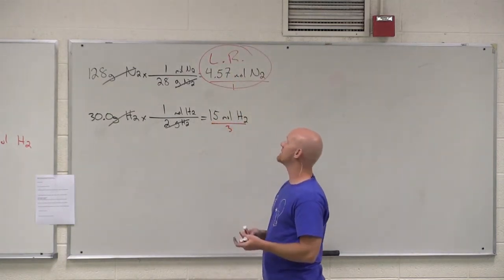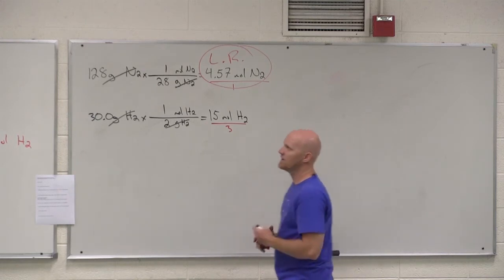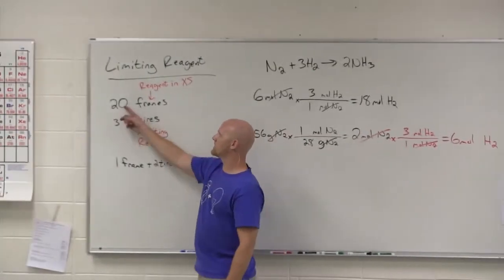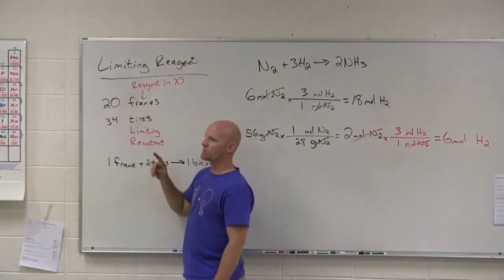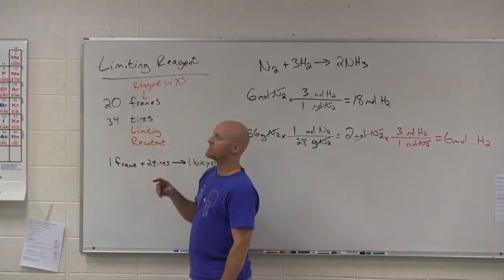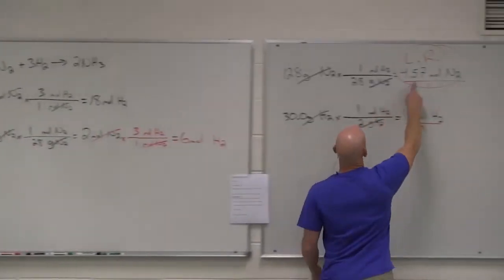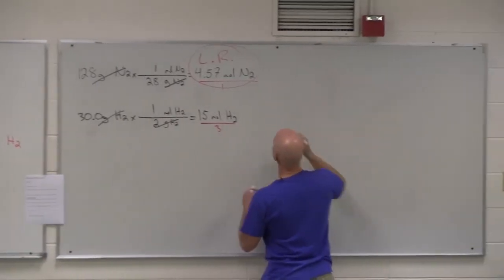And if that is indeed my limiting reactant, that's what limits how much product I can get. So, just like we did back here with the frames and the tires, which one of these did we actually use to figure out how many bicycles we can make? The limiting reagent. And so, we're going to do the same thing over here. We're going to use the limiting reagent to figure out how much of the product we can make.